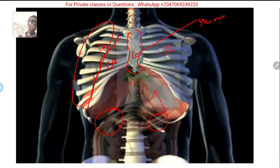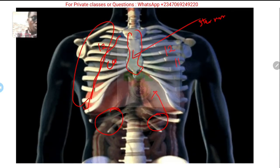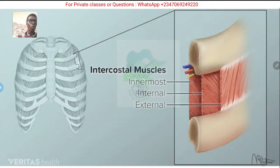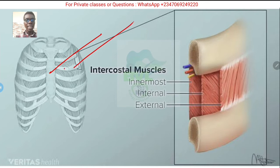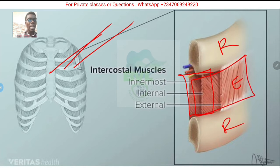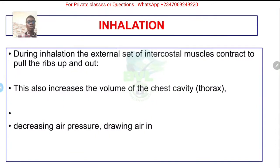The diaphragm is here, and in between the ribs we have the intercostal muscles. Here again is the sternum, these are the ribs, and these are the cartilages that attach the ribs to the sternum. You can see the external intercostal muscle, and then there are the internal intercostal muscles. They are called intercostal because they are in between the ribs.